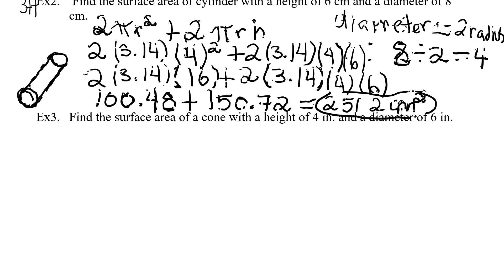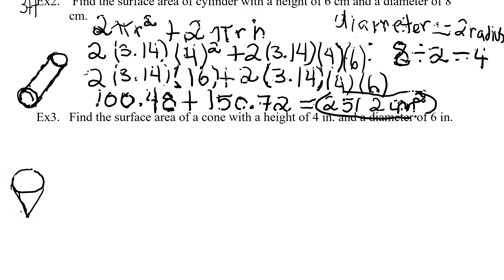Let's look at one more example. Find the surface area of a cone with a height of four inches and a diameter of six inches. Again, we first identify our shape — a cone, like an ice cream cone, as a three-dimensional shape. We have the diameter but we want the radius. Our radius equals six divided by two, which gives us three.